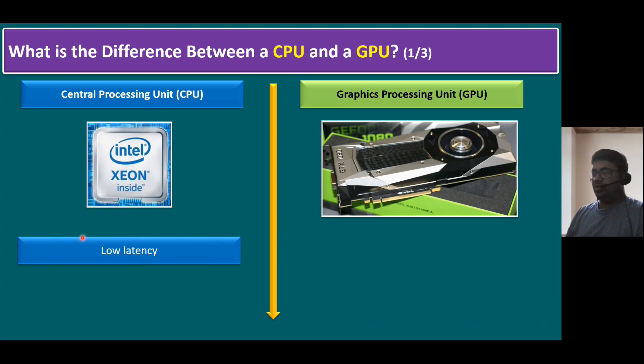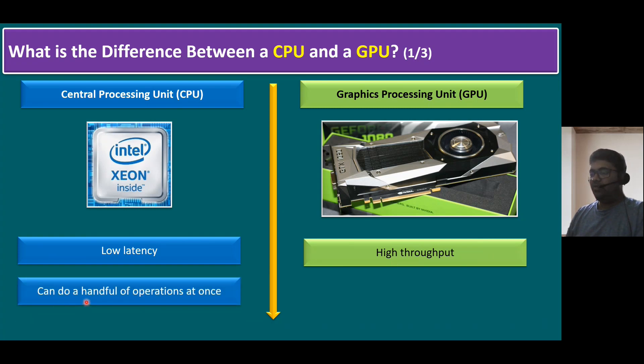CPU normally provides low latency, and when compared to GPU, GPU provides high throughput. CPU can do a handful of operations at once, and when it comes to GPU, GPU can do thousands of operations at once.